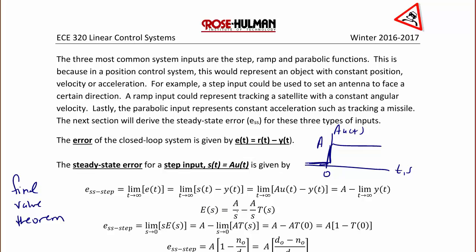Using the final value theorem and finding the Laplace transform, we have E(s) = A(s) - A/s T(s). This is true because when we think about our block diagram in the frequency domain, this is T(s) and our input is A/s, and the output would be A/s times T(s), which is Y(s). So E(s) is A(s) - A/s T(s).